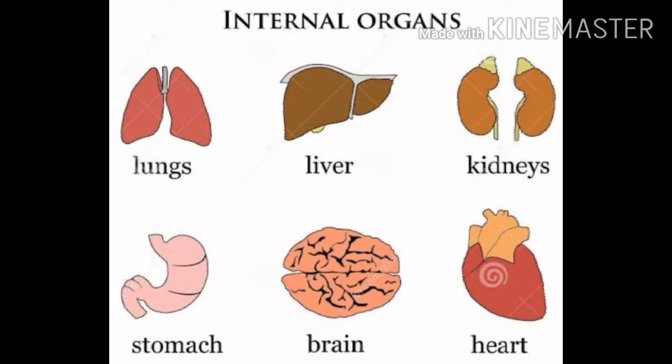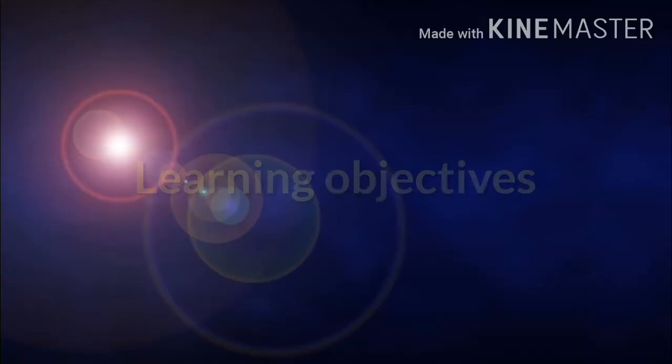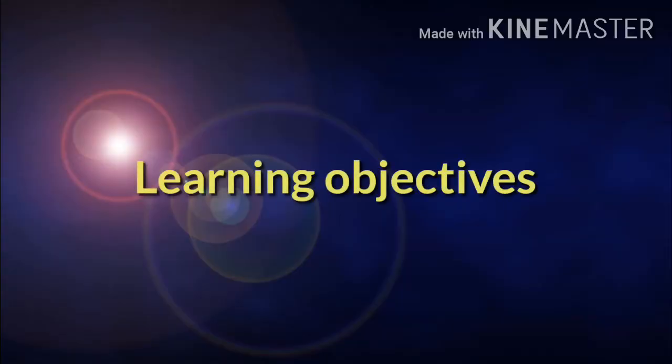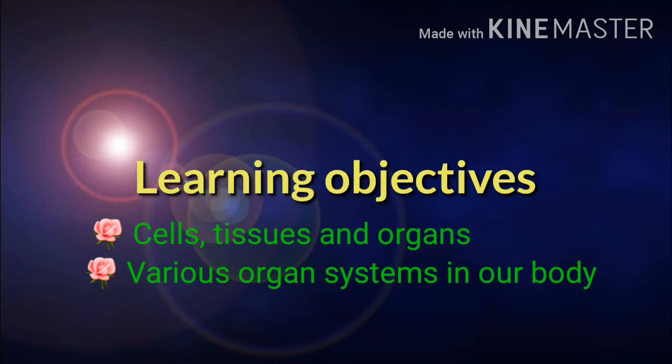These internal organs do various functions in our body. To check your previous knowledge, we discussed the various parts of the human body and some internal organs. In this chapter, we will learn about cells, tissues, organs, and various organ systems in our body.